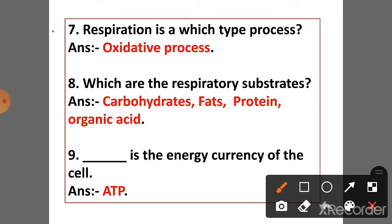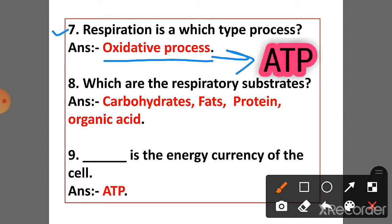Question 7: Respiration is which type of process? Answer: Oxidative process. The oxidative process is used for the formation of ATP.